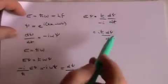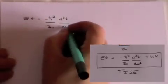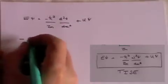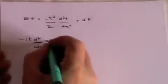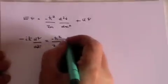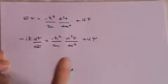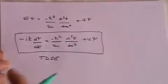So we can substitute e psi for i h bar d psi by dt into the Schrödinger equation, which you'll remember was e psi equals minus h bar squared over 2m d2 psi by dx squared plus u psi. And that is the time dependent Schrödinger equation.